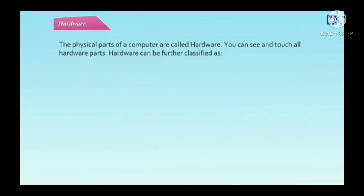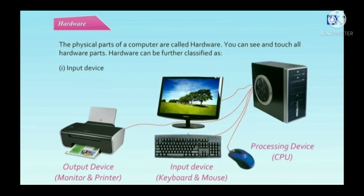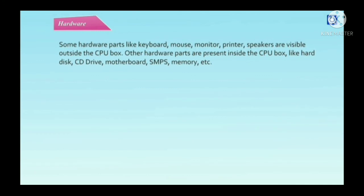Hardware — the physical parts of a computer are called hardware. You can see and touch all hardware parts. Hardware can be further classified as input device, processing device, and output device. Some hardware parts like keyboard, mouse, monitor, printer, and speakers are visible outside the CPU box.